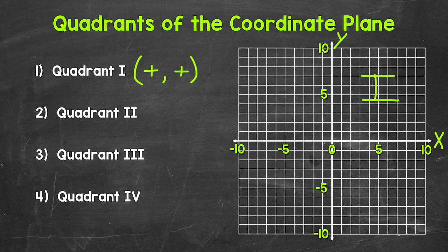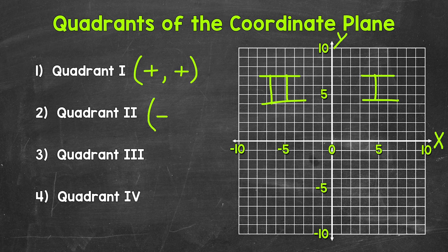Let's move on to quadrant 2, which is the upper left quadrant — this is quadrant 2 right here. For quadrant 2, the x-coordinates are negative and the y-coordinates are positive. So if the x-coordinate is negative and the y-coordinate is positive, then the point will be in quadrant 2.